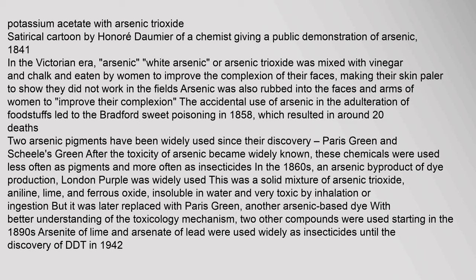The accidental use of arsenic in the adulteration of foodstuffs led to the Bradford sweet poisoning in 1858, which resulted in around 20 deaths. Two arsenic pigments — Paris Green and Scheele's Green — were widely used since their discovery. After the toxicity of arsenic became widely known, these chemicals were used more often as insecticides. In the 1860s, an arsenic byproduct of dye production, London Purple — a solid mixture of arsenic trioxide, aniline, lime, and ferrous oxide — was widely used but later replaced with Paris Green. Arsenite of lime and arsenate of lead were used widely as insecticides until the discovery of DDT in 1942.